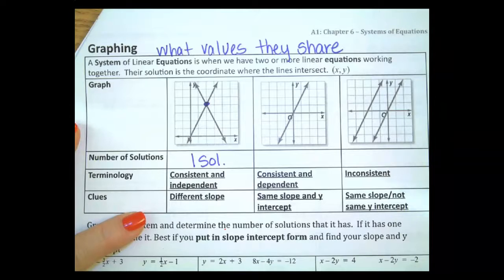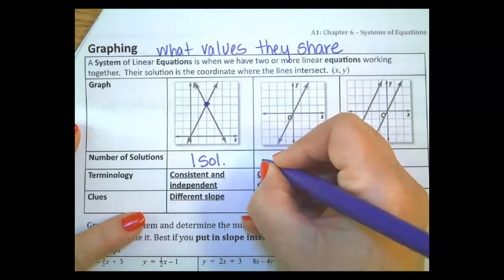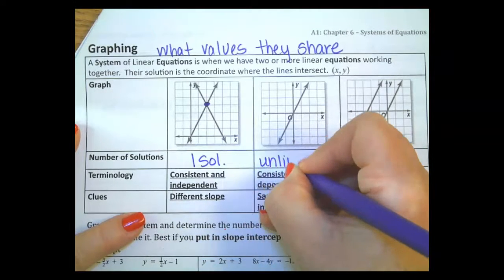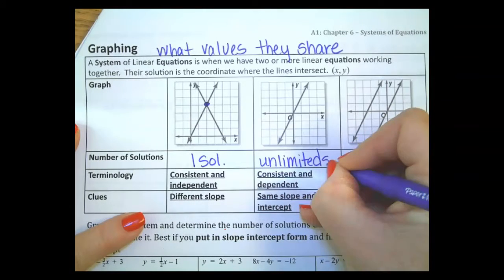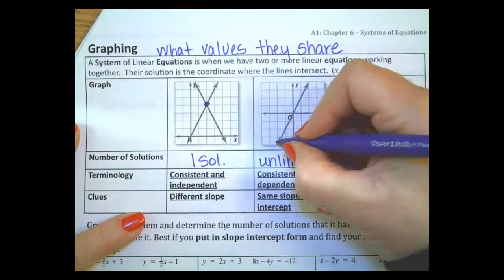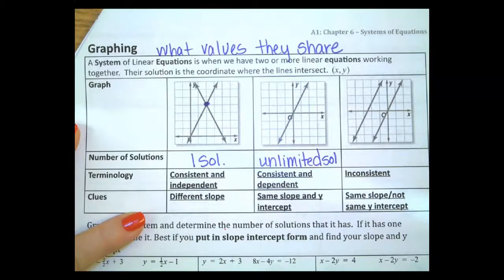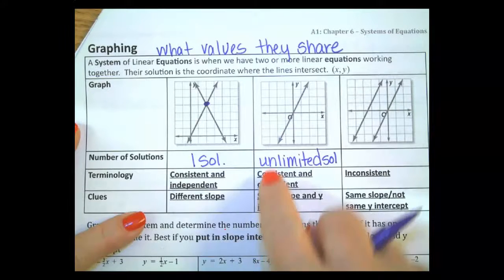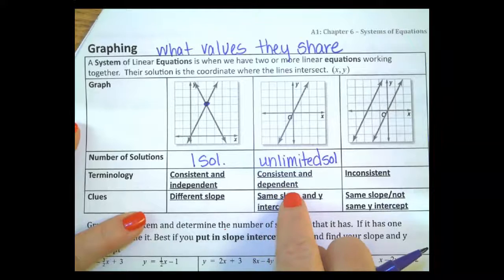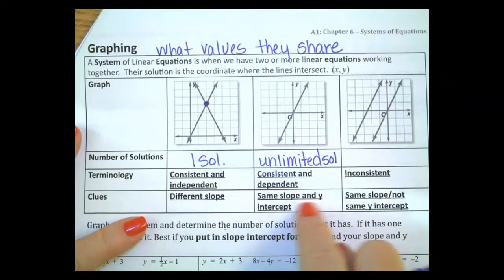This one here, you don't know it, but they have unlimited solutions. Because basically this is an equation on top of itself. There's two equations here. So this is consistent, but it's dependent. So if it's one on top of the other, we're going to need these words. As clues, they'll have the same slope and y-intercept.